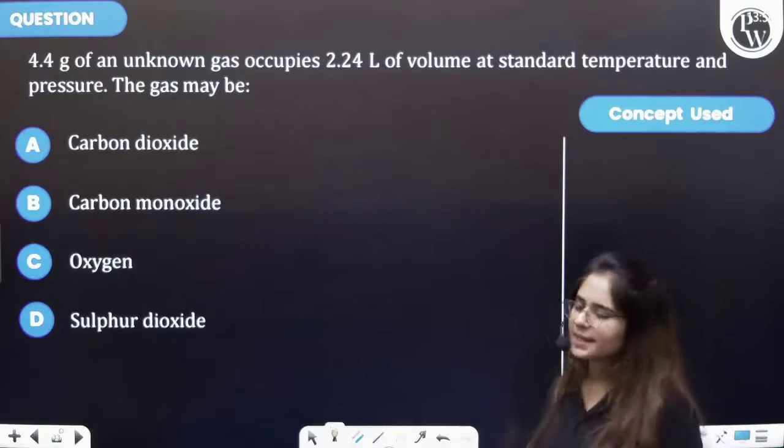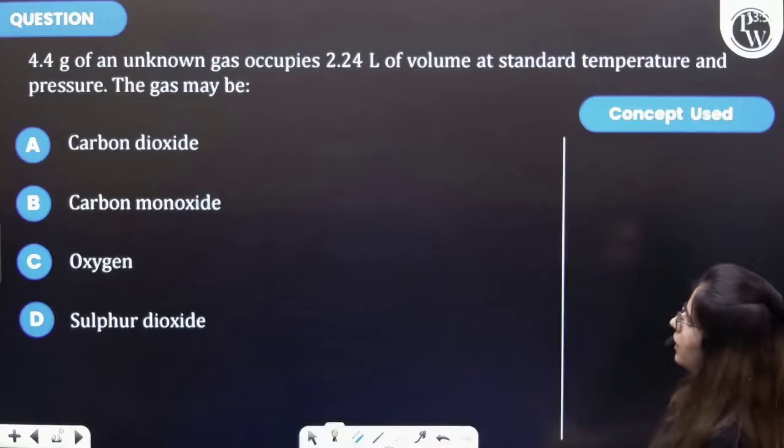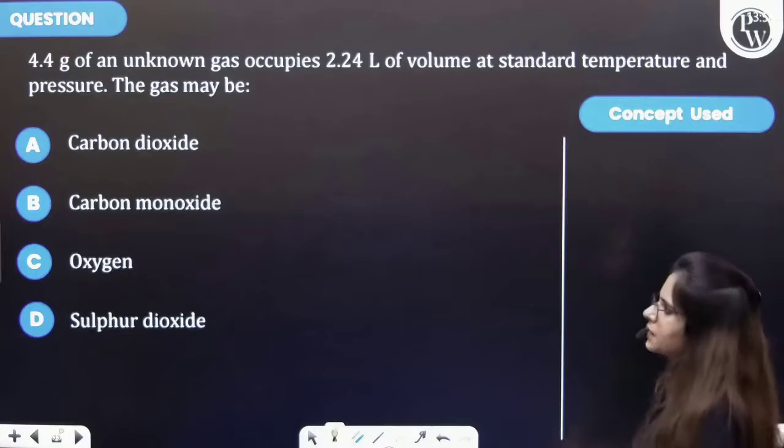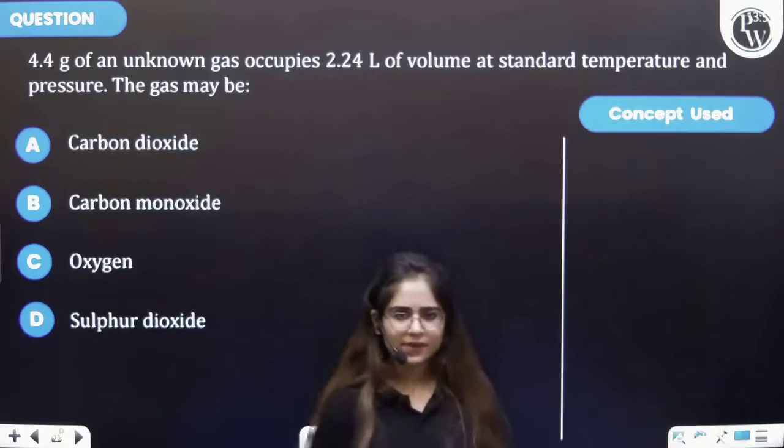Let's see this question. The question says that 4.4 gram of an unknown gas occupies 2.24 liter of volume at STP and the gas may be. So firstly let's see the key concept of this question.